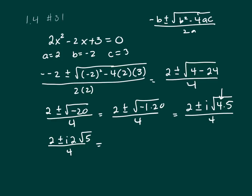Because this is an imaginary number, split it up. That's 2 over 4 plus or minus 2 over 4 i times the square root of 5.